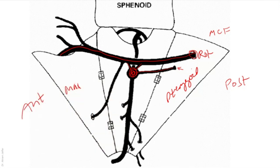That nerve contains two types of fibers: sympathetic and parasympathetic fibers — a combination of the deep petrosal and the greater petrosal nerve.